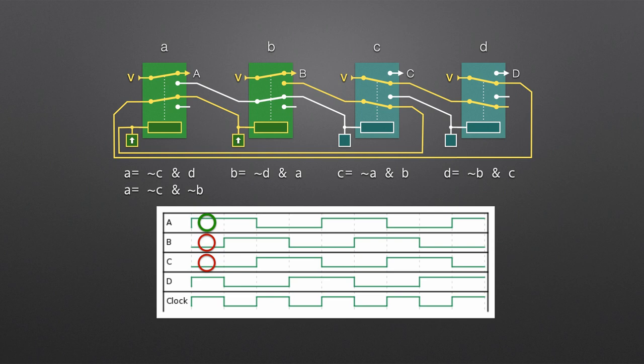Relay B also turns on and its capacitor starts charging. And then around 2 milliseconds after that, its contacts change over, removing power from relay A, which then starts drawing from its capacitor.